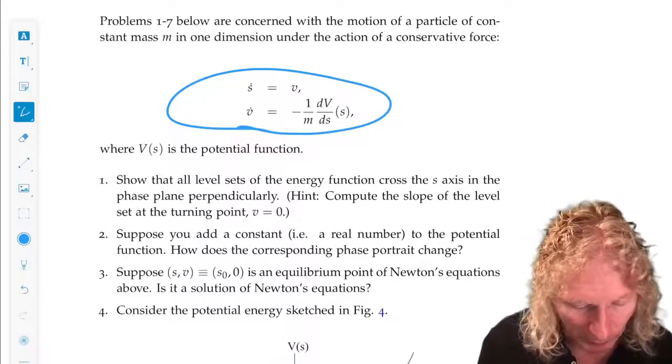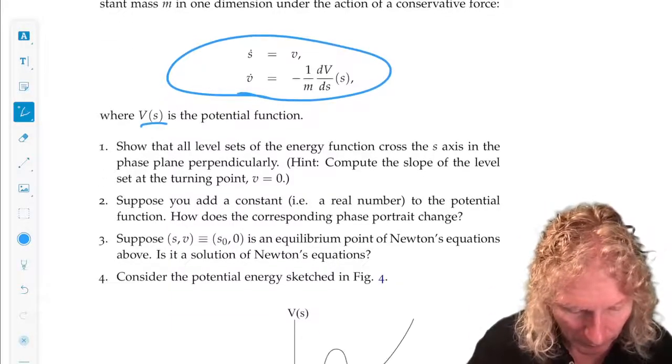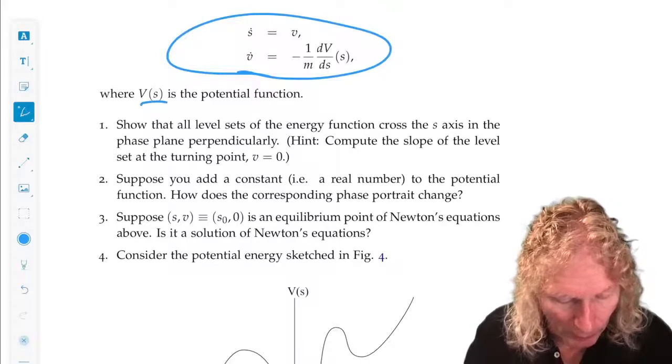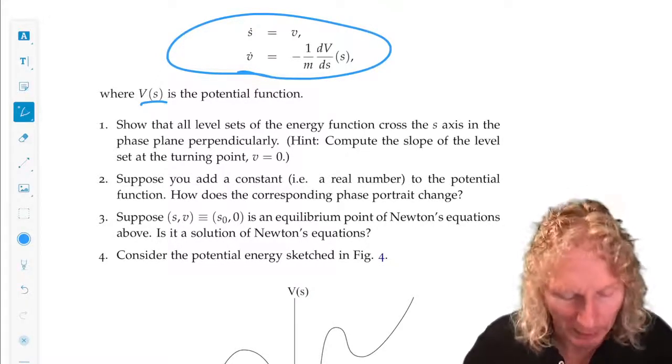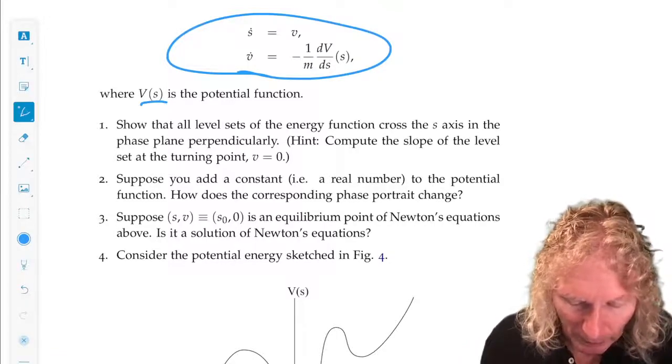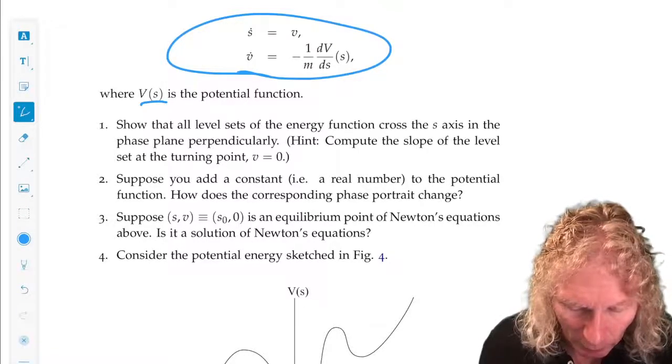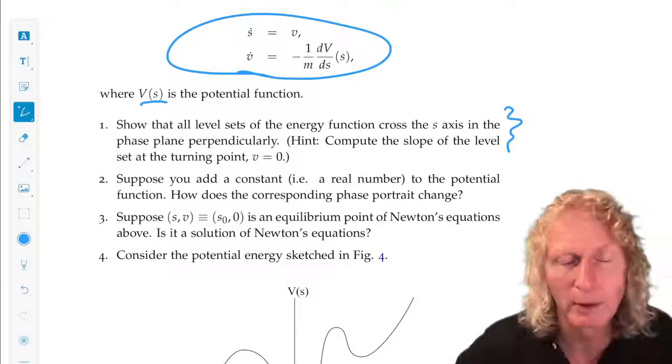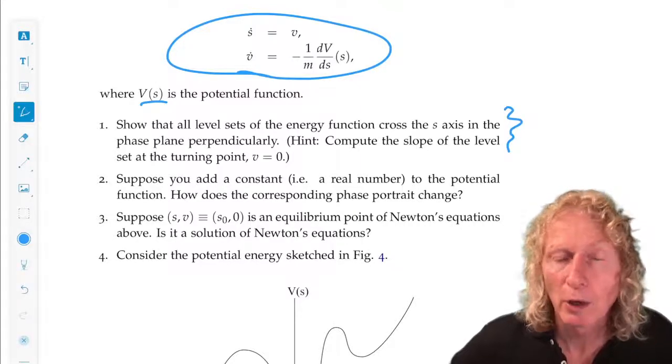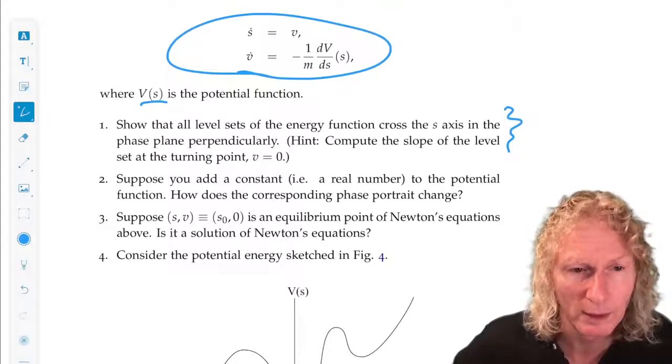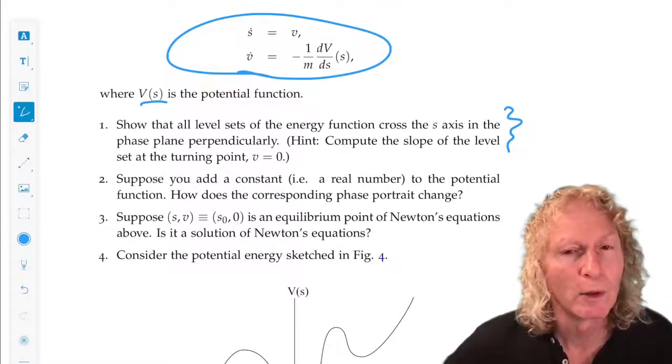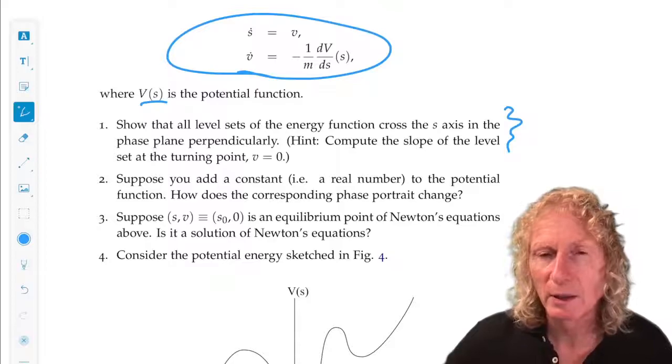So the first three problems I've discussed a little bit already. I want you to show that level curves in the phase plane cross the s axis. They go from V positive to V negative at the turning points in a perpendicular fashion.